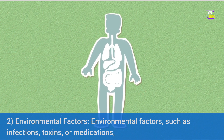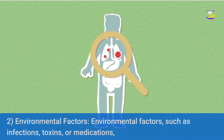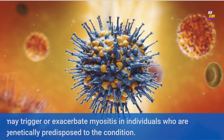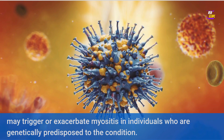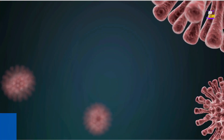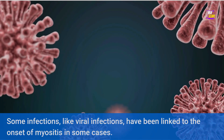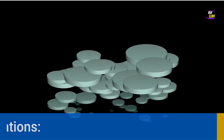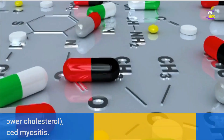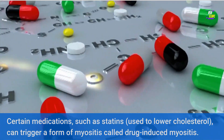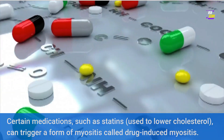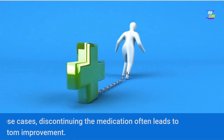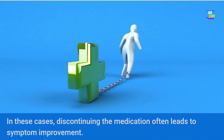2. Environmental Factors — environmental factors such as infections, toxins, or medications may trigger or exacerbate myositis in individuals who are genetically predisposed. Some infections, like viral infections, have been linked to the onset of myositis in some cases. 3. Medications — certain medications, such as statins used to lower cholesterol, can trigger a form called drug-induced myositis. In these cases, discontinuing the medication often leads to symptom improvement.